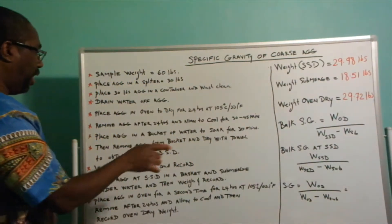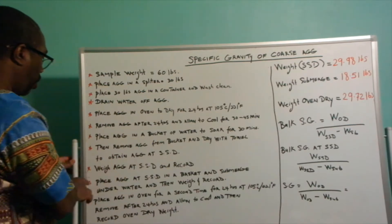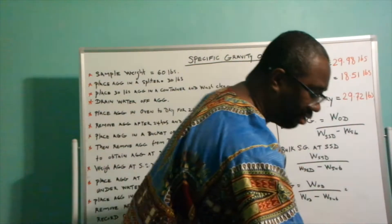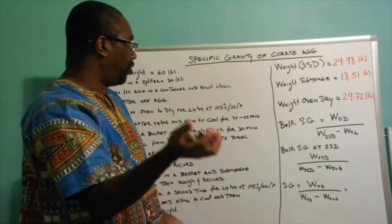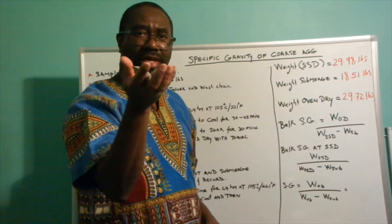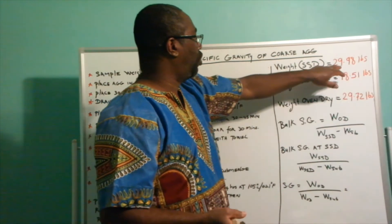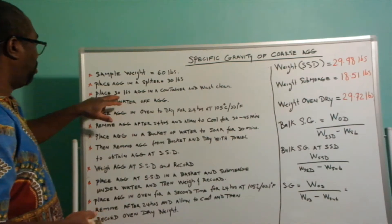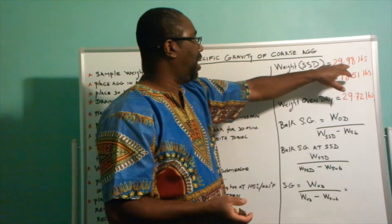Therefore, when you obtain the aggregate at saturated surface dry, you weigh those aggregates and record the weight. Let's say for argument's sake that the weight of the aggregates at saturated surface dry comes down to 29.98 pounds. It was initially 30 pounds, but after you have soaked and dried it comes down to 29.98 pounds.